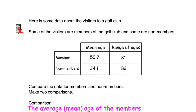Looking at the table, we've got members and non-members. If we look at the mean age — the average age — for members it's 50.7 years, so nearly 51 years old, and for non-members it's 34.1, so around 34 years old. The mean age for the members is much older than the mean age for the non-members. So that's one comparison: the members are older than non-members on average because their mean age is much higher.